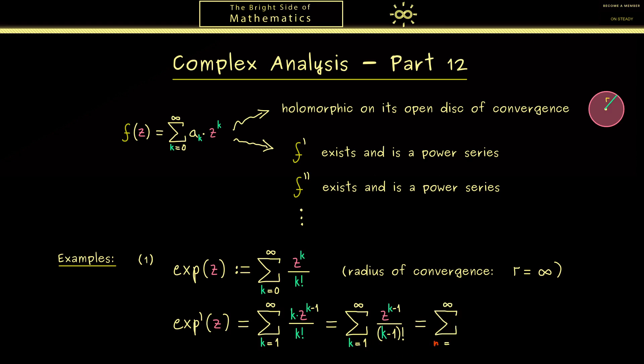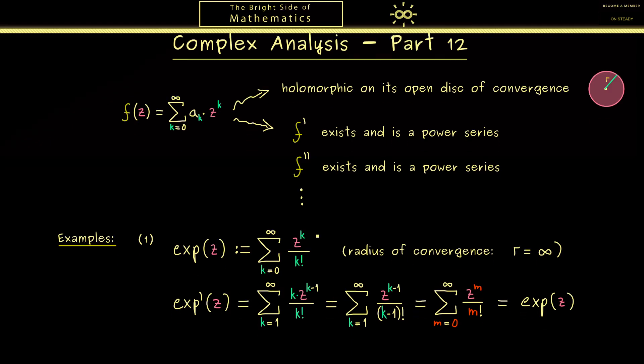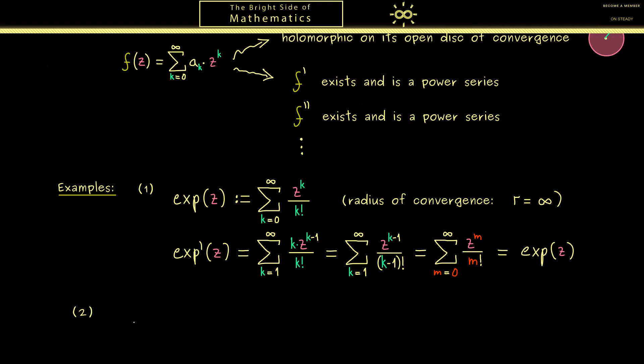Now the nice thing we should see here is that we can cancel this k with k factorial. Therefore in the denominator only k minus 1 factorial remains. So now this is a very nice expression and you see we can do an index shift to simplify it even more. So instead of starting with 1, we start with m equals 0 again. And please note the new index m should represent k minus 1. Hence we have z to the power m divided by m factorial. And with this result you see we get the original exponential function back. So taking the derivative does not change the function. In fact, this means that all the derivatives of the exponential function are the same. And this is an important property you should remember.